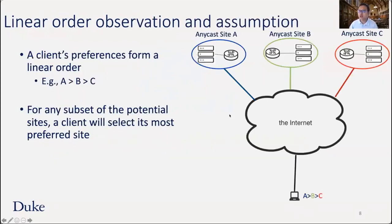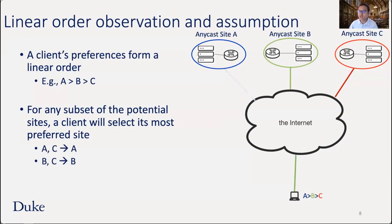We observed that a great number of clients form a linear preference order among available Anycast sites. For example, a client prefers site A over site B over site C, and if the prefix is announced from any subset, the client always selects its most preferred available site. Motivated by this observation, we hypothesize that clients form a linear order and we can predict their catchment based on this linear order. We designed a pairwise comparison approach to discover all clients' linear preferences using an Orchestrator that announces the prefix from two sites and sends probe packets.